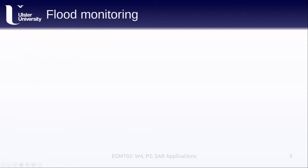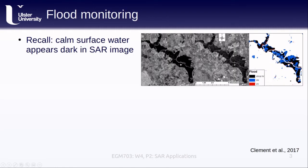As we've seen from the week three practical, calm surface water tends to appear dark in a SAR image. The water surface acts as a specular reflector and directs most of the signal away from the sensor. In the image here we have two different polarizations showing a flooded area. On the left we have the VH polarization, in the middle the VV polarization, and on the right the derived flood extents from each of these two images. This example is from a study that looked at flooding in the rivers Wharf and Ouse in Northeast England during the winter 2015 to 2016.